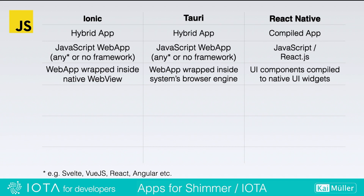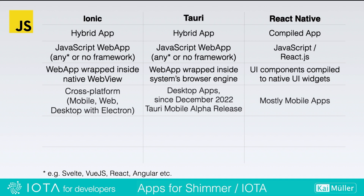Together with Expo, I had a very pleasant developer experience with React Native in the past. The outcome of the three technologies differs: Ionic supports mobile and web, and for desktop you also need Electron. Tauri was created first for desktop apps and since last month has an alpha release for mobile. React Native only supports mobile apps.